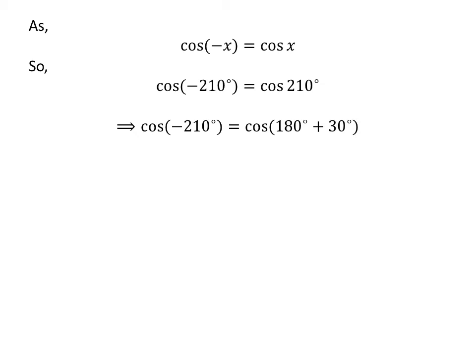As 210 degrees is equal to 180 degrees plus 30 degrees, cosine of minus 210 degrees is equal to cosine of 180 degrees plus 30 degrees.